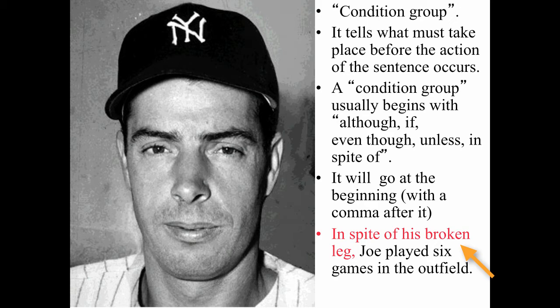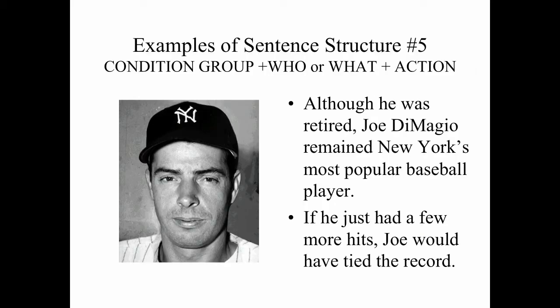Look how much more interesting that sentence is with that little phrase at the beginning. Here are some more examples, because this is Joe DiMaggio, one of the most famous New York Yankees. Notice the condition group at the beginning, then his name, then an action. My first example: 'Although he was retired, comma, Joe DiMaggio remained New York's most popular baseball player.' That one started with although.